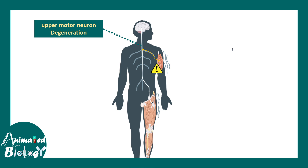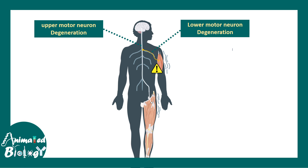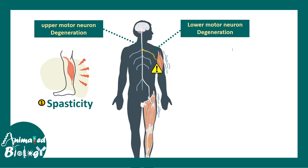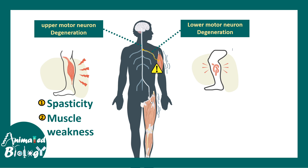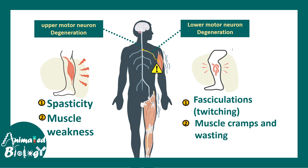In ALS, the upper motor neuron tract or the lower motor neuron tract can be degenerating, and there are distinct clinical symptoms which define both. In case of upper motor neuron degeneration, spasticity and muscle weakness are prominent. In case of lower motor neuron degeneration, fasciculation — meaning twitching — along with muscle cramps and wasting are pretty common.